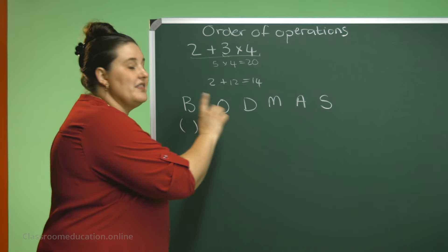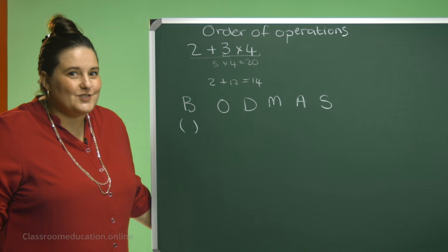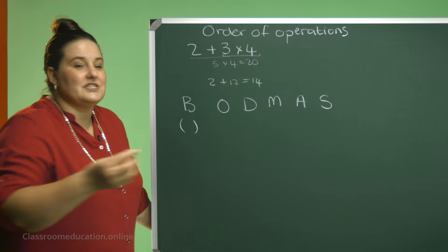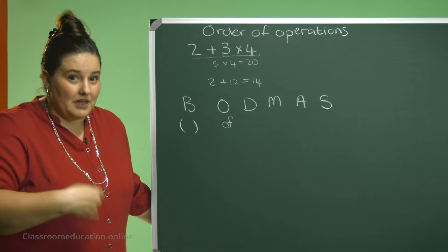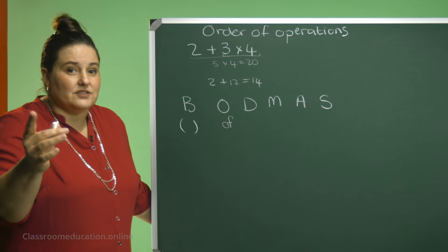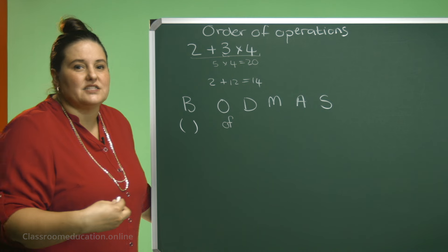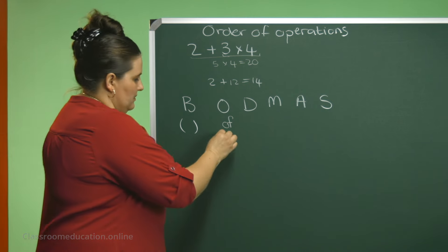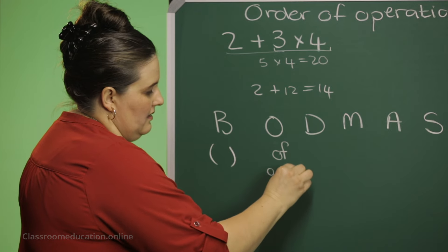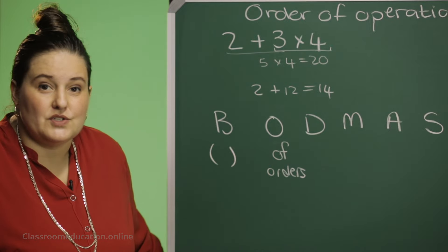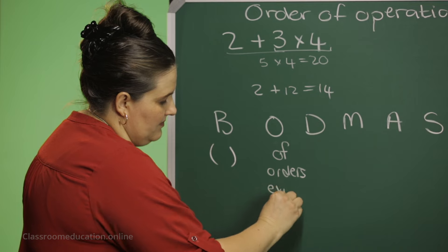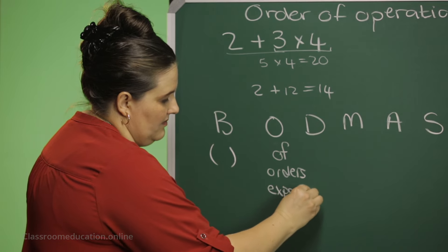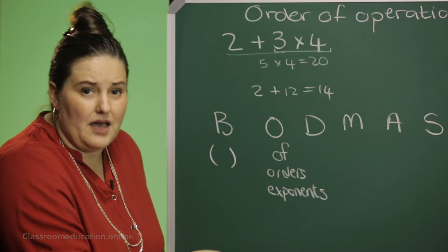Then you check whether there's an O. What does the O stand for? The O stands for of. And of means multiply. And, or the O stands for orders. In other words, exponents and powers.